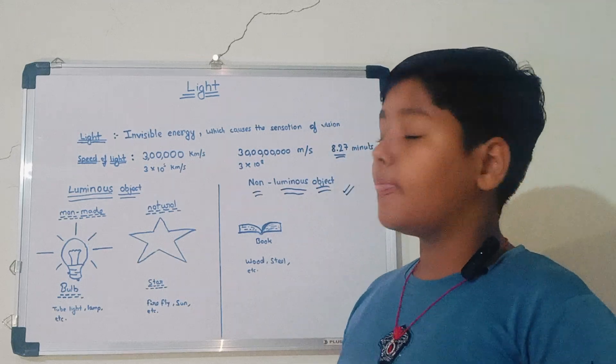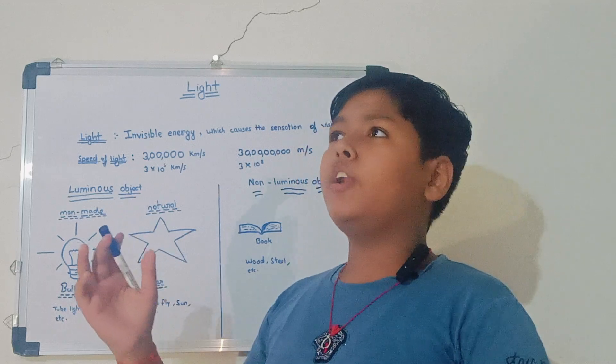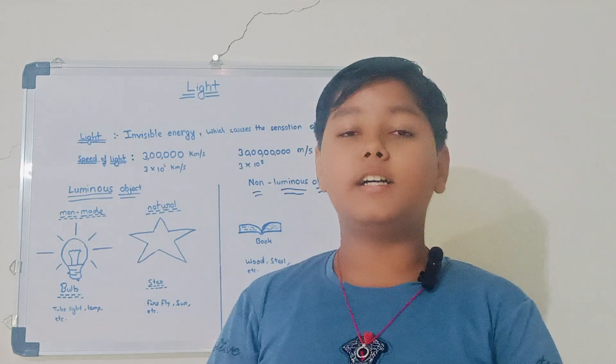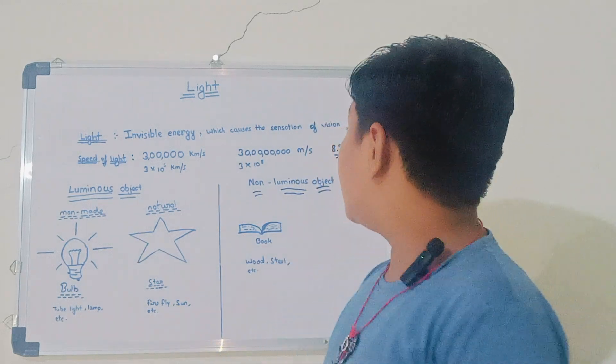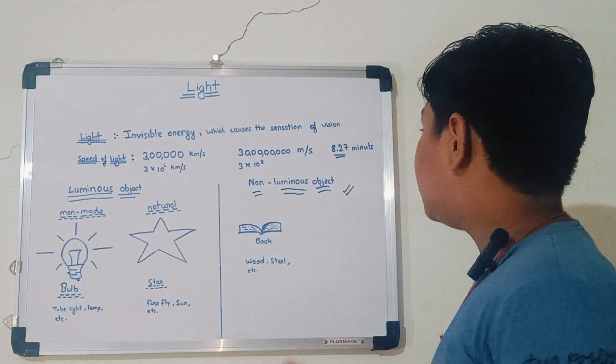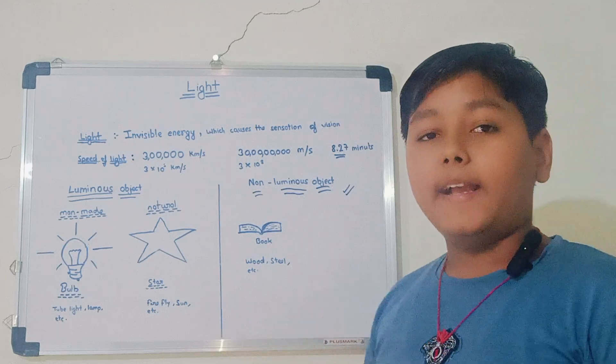So what is the speed of light that it travels from the sun to our home planet, earth? Yes, it is 8.27 meters, I mean minutes, that it takes to travel from the sun to our home planet.